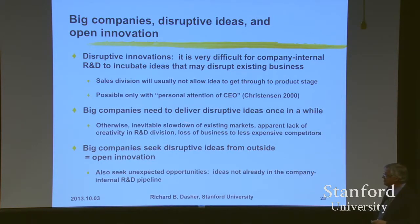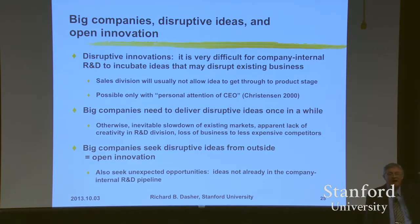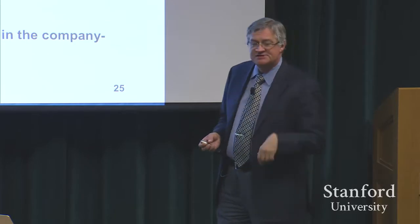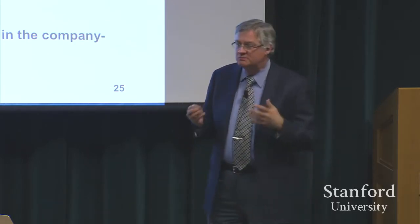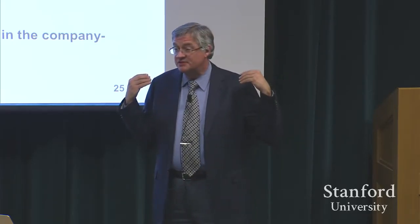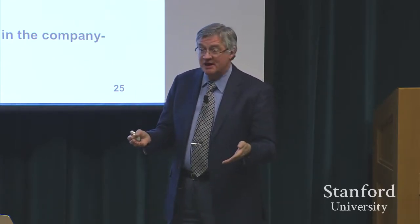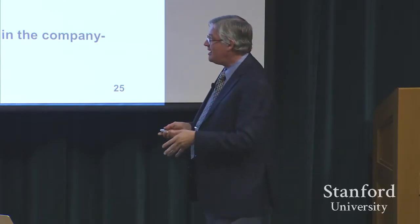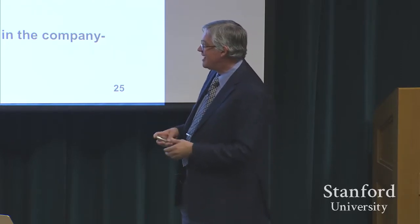Big companies need to deliver disruptive ideas once in a while. Otherwise, their existing business lines are going to top out — the top of the S-curve happens — and while you're trying to sustain your existing business line, somebody's going to come along and do it cheaper, or have a disruptive innovation from another angle that will disturb what you're doing. As a big company manager, you must always consider that your experience has limits. Things will come along in the future that you may not expect. The secret of managing open innovation is to be able to take advantage of those opportunities at the right time.